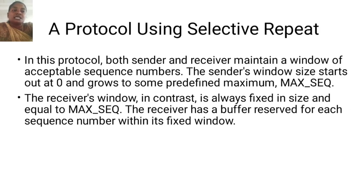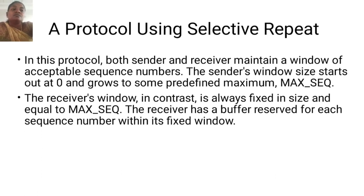A protocol using selective repeat. In this protocol, both sender and receiver maintain a window of acceptable sequence numbers. The sender's window size starts out at 0 and grows to some predefined maximum, max sequence. The receiver's window, in contrast, is always fixed in size and equal to max sequence. The receiver has a buffer reserved for each sequence number within its fixed window.